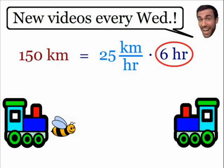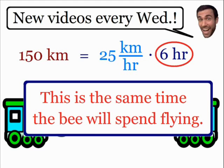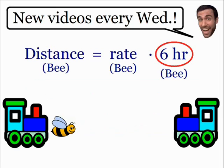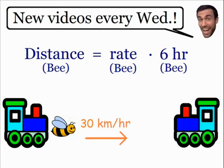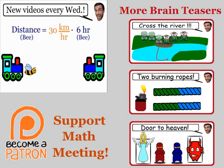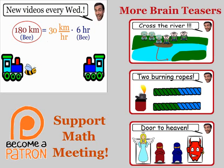The reason this time of 6 hours is so important is that it is the same time the bee will spend flying — the time it takes for the trains to collide is exactly the same as the time the bee spends in the air. Now applying the distance formula to the bee: it travels for 6 hours at a constant speed of 30 kilometers per hour. Multiplying 30 times 6, the bee travels 180 kilometers before the trains collide.